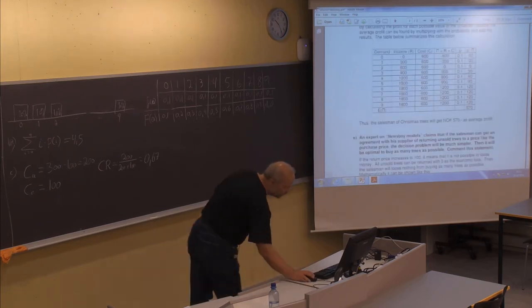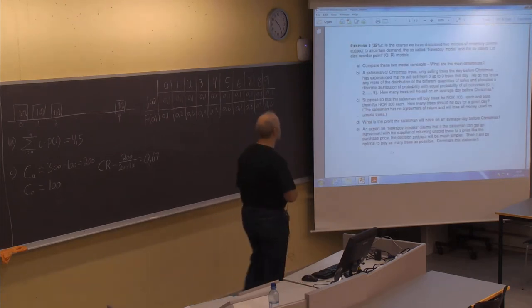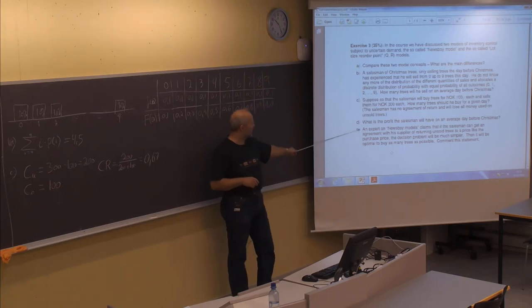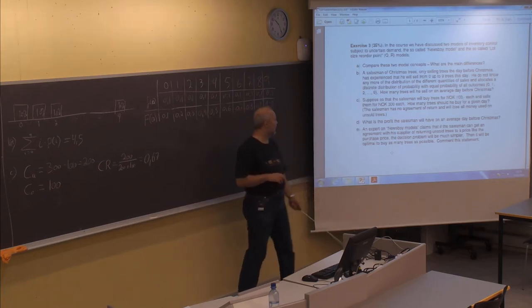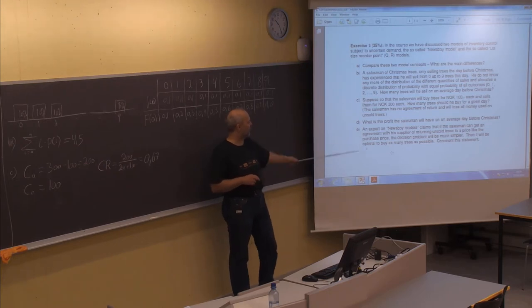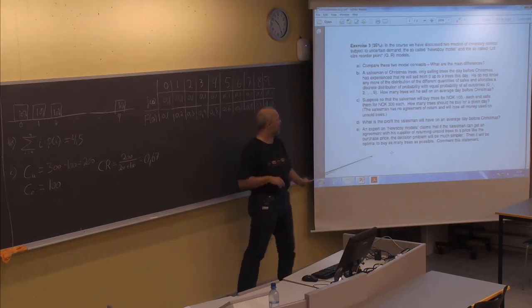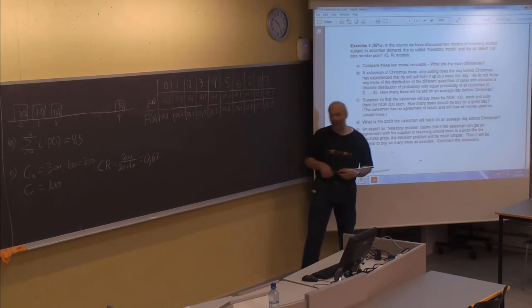For the last question, an expert on the newsboy model claims that if the salesman gets an agreement with his supplier to return unsold trees at the purchase price, then the decision problem will be much simpler and it would be optimal to buy as many trees as possible.